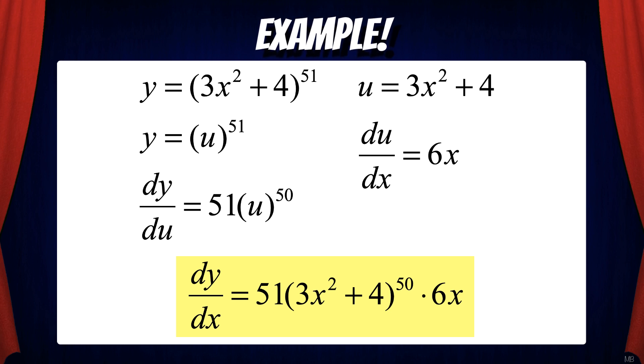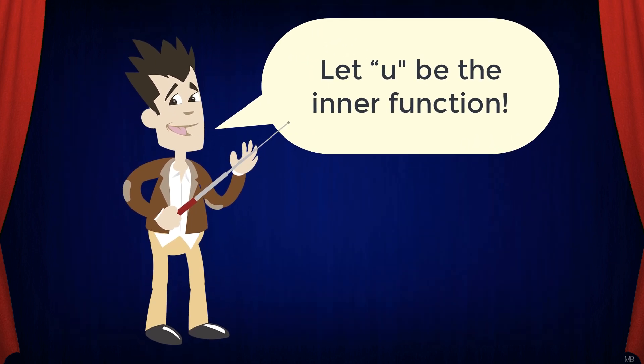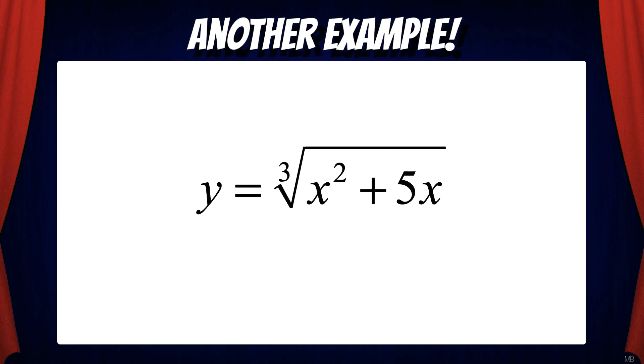And if we want we can multiply the 51 times 6x to simplify the algebra. So the trick with u substitution is to let u be the inner function.